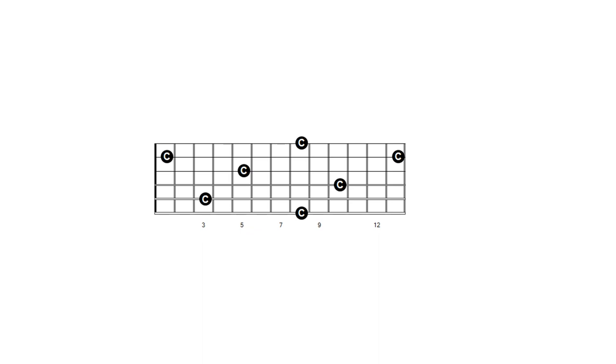Take a look at the locations of root C in the neck diagram below and observe the following. The C shape has roots on the A and B strings. The A shape on the A and G strings. The G shape on the E and G strings. The E shape on the E and D strings. And the D shape on the D and B strings.